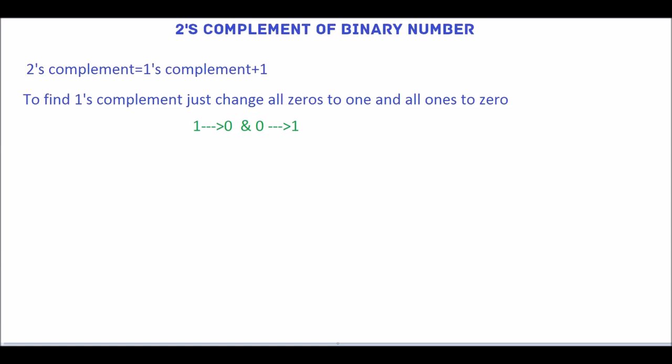Let's see how to represent the binary number 1001 in 2's complement form. First we have to find the 1's complement. So to find 1's complement, change 1 to 0, 0 to 1, 0 to 1, and 1 to 0. This is 1's complement.